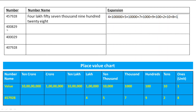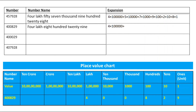The next example is 4,00,829. In the place value chart, 4 is on lakh, 0 on 10,000 and 1,000, 8 on 100, 2 on 10s, and 9 on 1s. The number name is four lakh eight hundred twenty-nine. Since 10,000 and 1,000 places are 0, the expansion is 4 × 1,00,000 + 8 × 100 + 2 × 10 + 9 × 1.